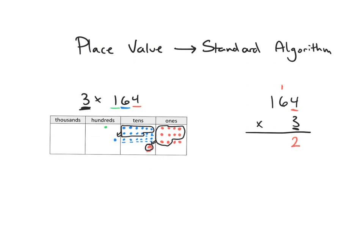I was able to regroup those into 1 hundred, and I'm left with 9 tens. So I had 19 tens in total, but after regrouping I'm left with 9 tens. On the standard algorithm, I had 9 tens, and then I regrouped 10 of those tens into 1 hundred, which I'll put above the hundreds place. Essentially, I just multiplied 3 times 6 which is 18, and then I added that 1 ten in — just like I added the one in over here.